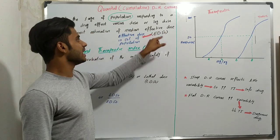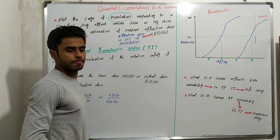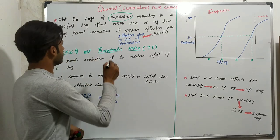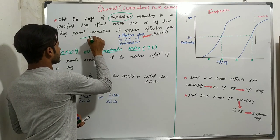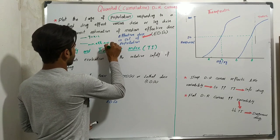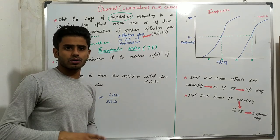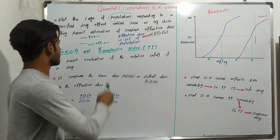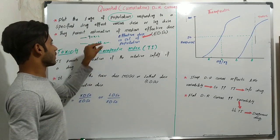These quantal cumulative dose-response curves help for the estimation of median effective dose, or ED50, which stands for the dose that is effective for 50 percent of the population. To understand this concept, the minimum effective concentration is the minimum amount or concentration of a drug that starts its action — the minimum concentration of a drug that is effective.